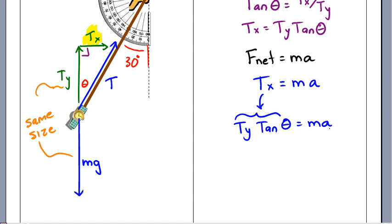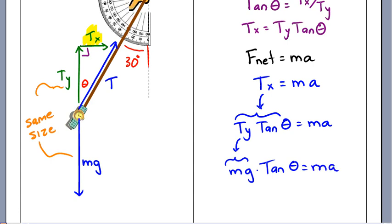A bit of a problem. I don't know what Ty is. But it's really not a problem because Ty is really just mg. So, I have mg times tan theta is equal to MA.